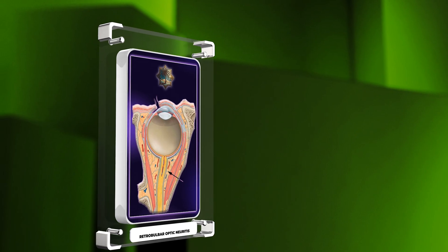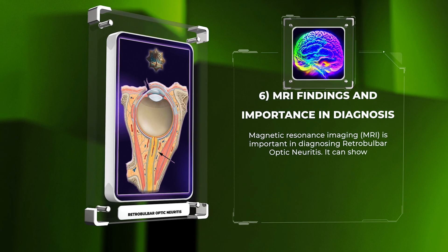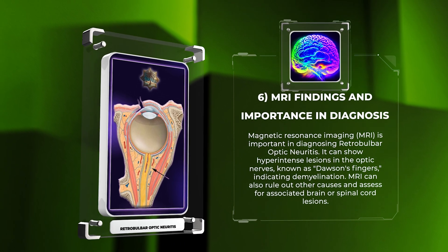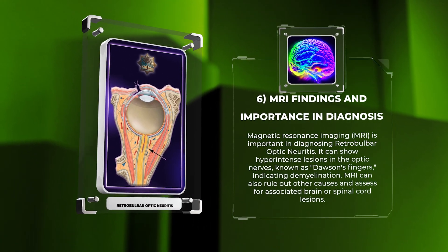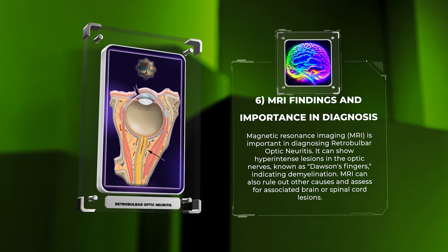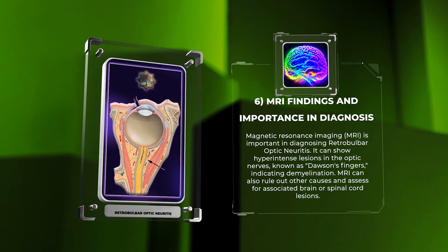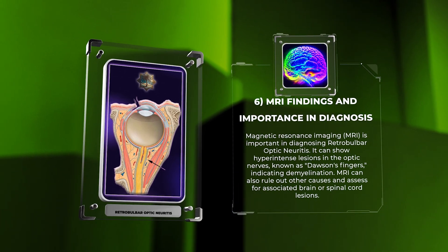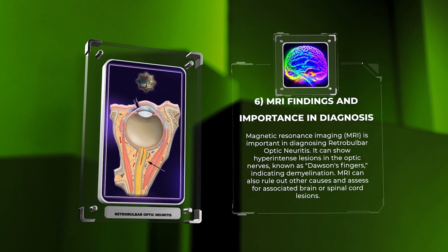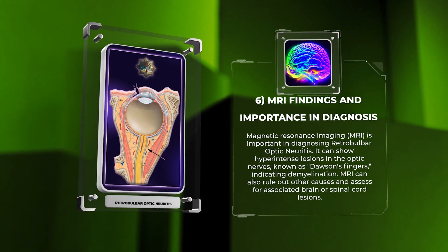Magnetic resonance imaging (MRI) is important in diagnosing retrobulbar optic neuritis. It can show hyperintense lesions in the optic nerves, known as Dawson's fingers, indicating demyelination. MRI can also rule out other causes and assess for associated brain or spinal cord lesions.